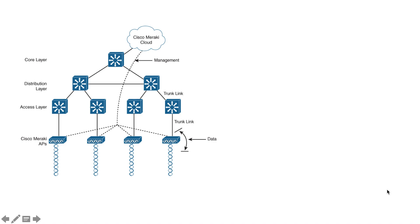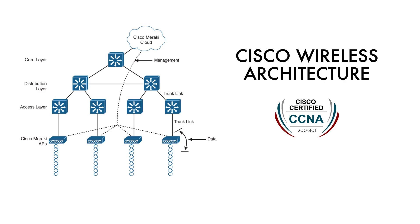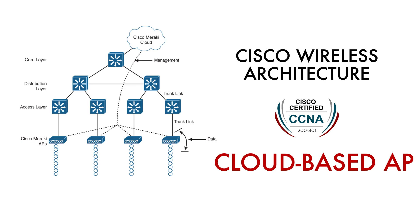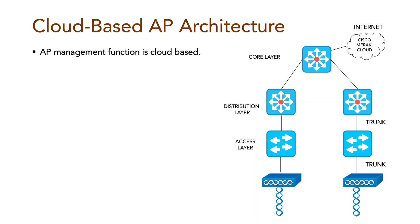In this session of the CCNA series, I'll discuss the second type of Cisco wireless architecture: cloud-based AP architecture. In this type of architecture, the access point management function is pushed into the internet cloud.